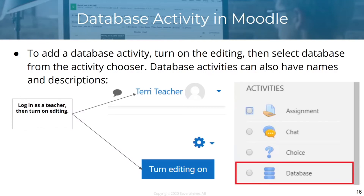To add a database activity, you need to turn on editing in Moodle and then select the database from the activity chooser. There are many activities available — assignment, chat, choice — but you need to select database for this.